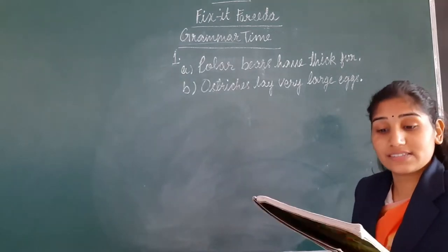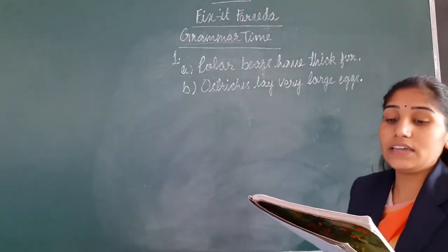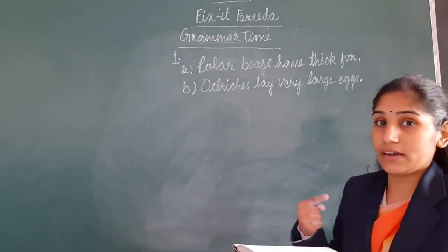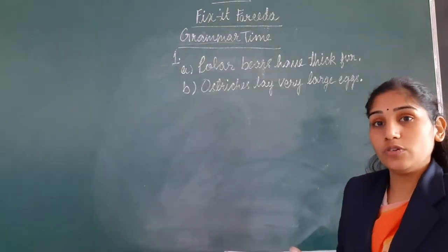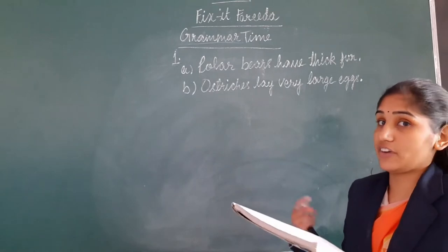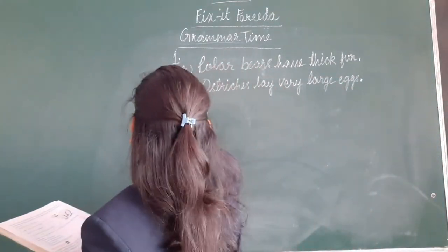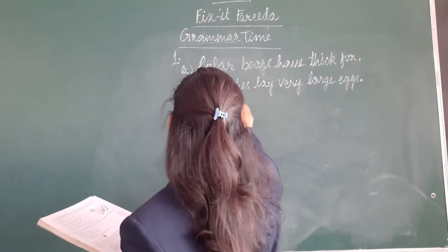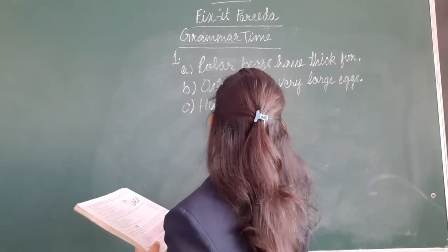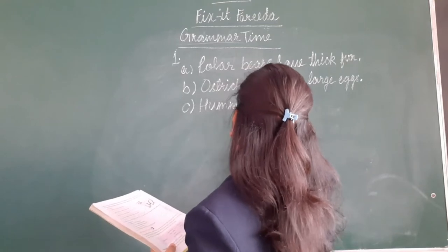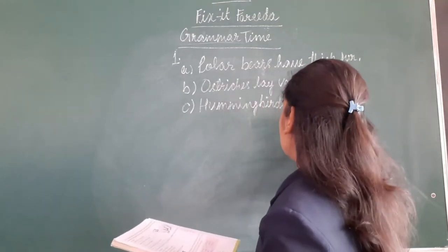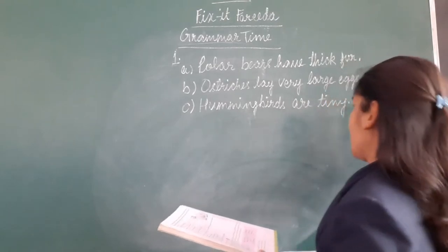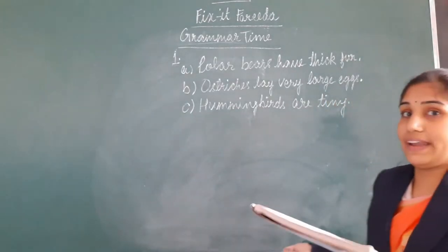Now children, let us move to part C. 'Tiny are hummingbirds.' Hummingbirds make a humming sound, so they are tiny. We will write: Hummingbirds are tiny. And we will put a full stop at the end.